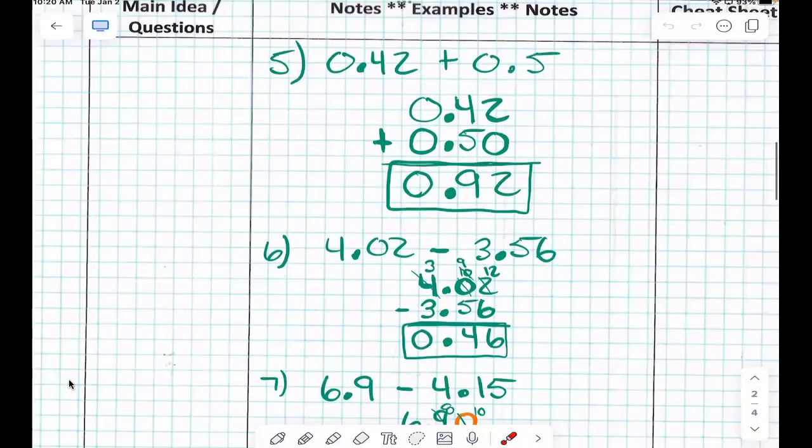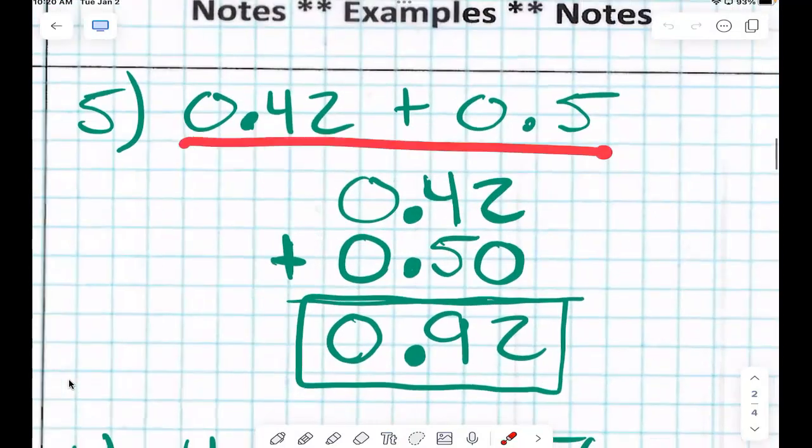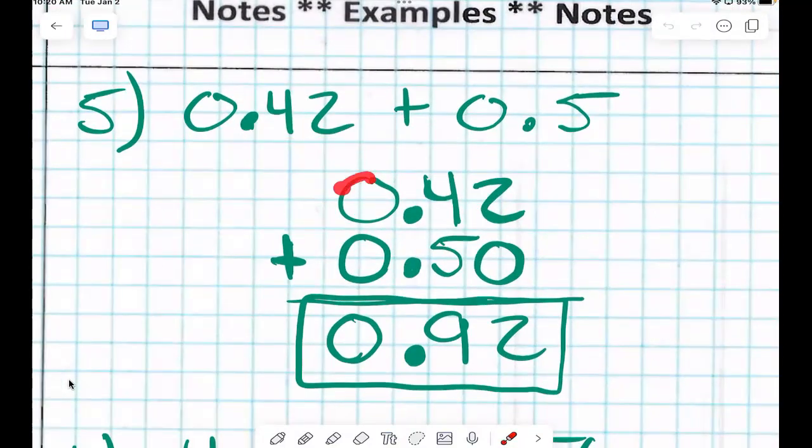Here's an example. Number five. We had 4 hundredths plus 5 tenths. So I wrote 4 hundredths, 0.42, and then I needed to add, so I wrote plus 5 tenths. I need to make sure that my decimal points are lined up, right? I wrote my 5 tenths. But are those numbers evened out? Are my place values evened out?